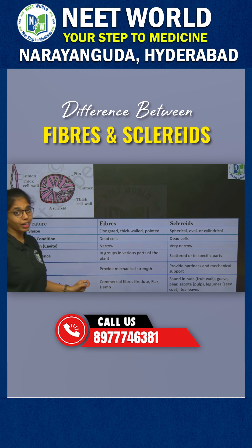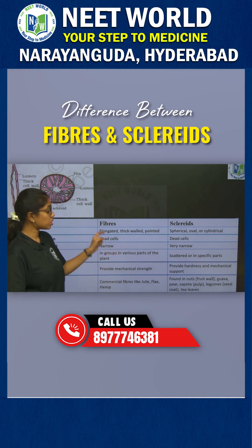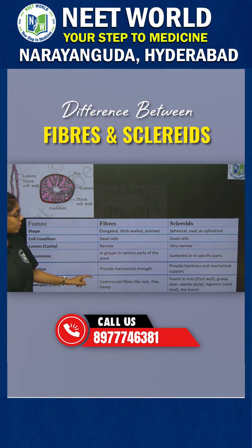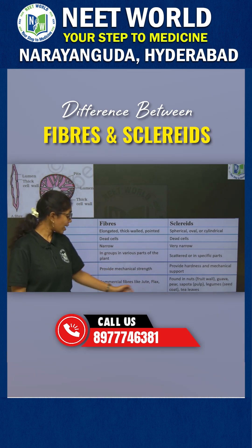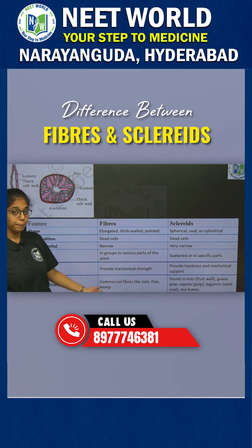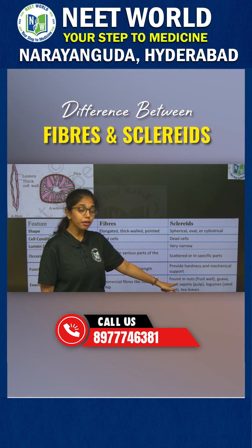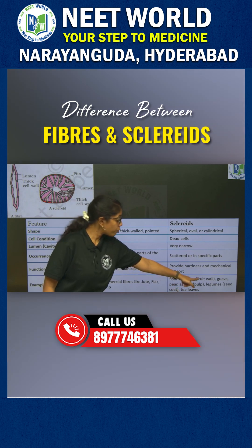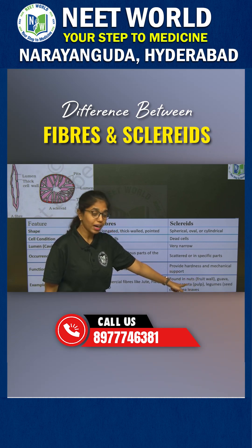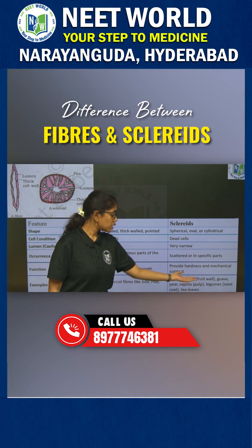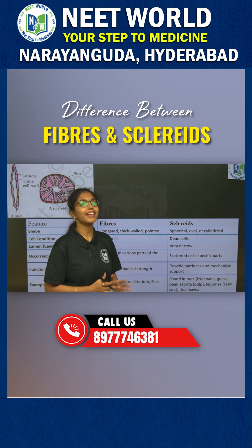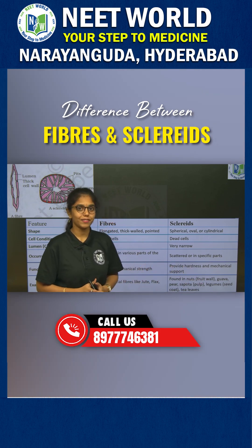The most important segment is examples. For fibers, the best examples are commercial fibers like jute, flax, and hemp. Scleroids are found in fruit walls of nuts, pulp of guava, pear, and sapota, seed coats of legumes, and in tea leaves.